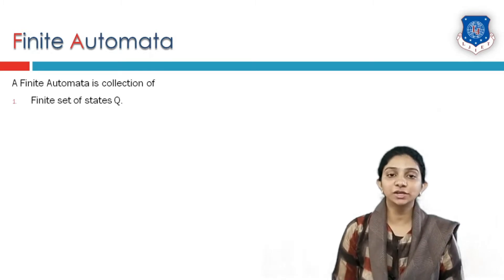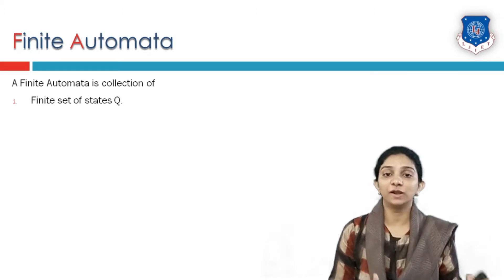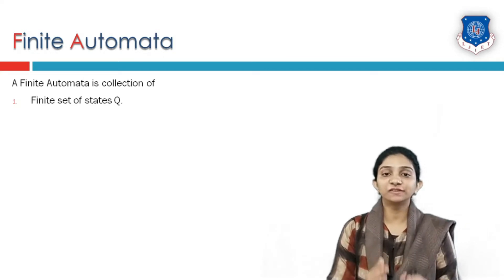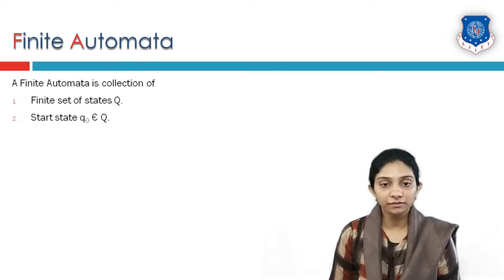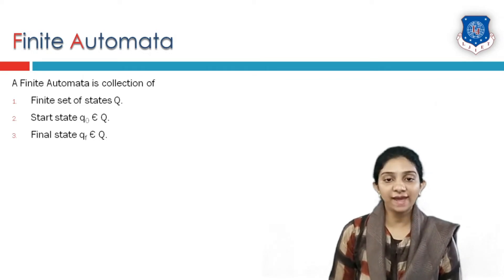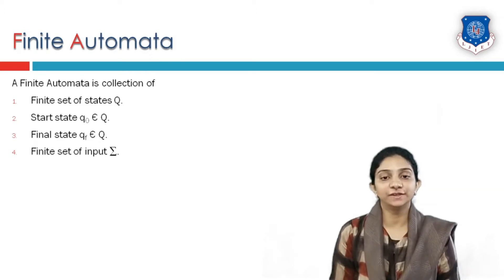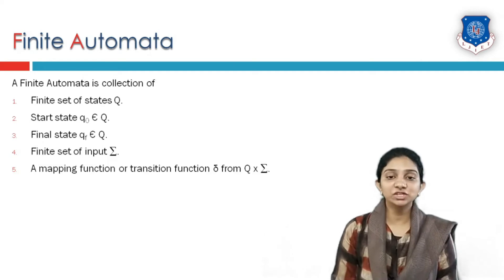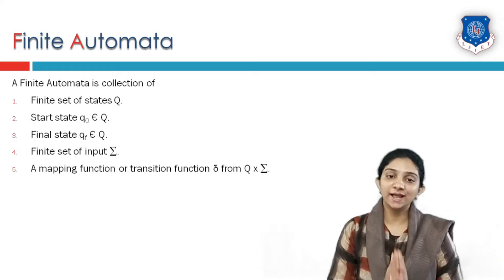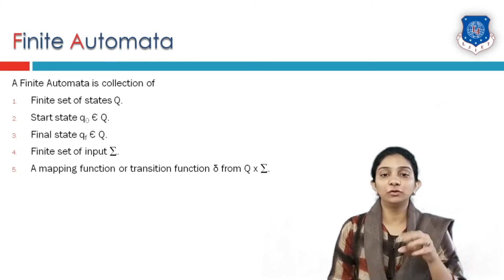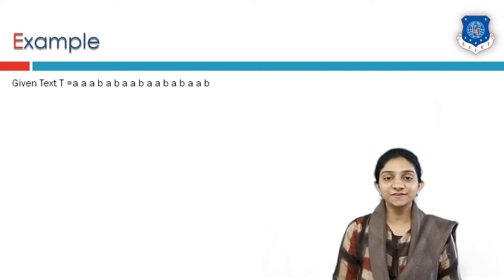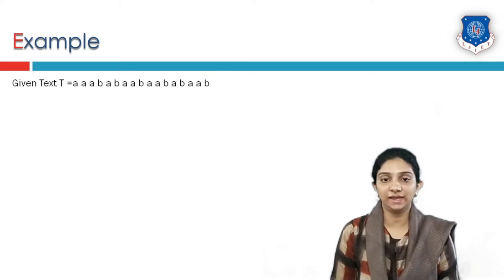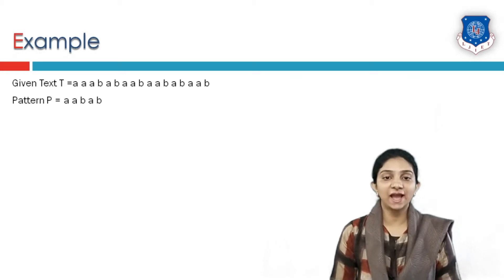Finite automata is a collection of a finite set of states, called Q. Q is a set which consists of finite states in which the starting state is denoted by q0 and the final state is called qf. There is a finite set of inputs denoted by sigma, and a transition function delta — if any input is given to a particular state it leads to some new state. For example, the text string is AAABABABABABABABA and the pattern string is AABAB.